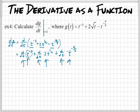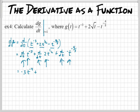Let's do t to the negative 3 first. That's going to be negative 3 — I took the negative 3 and dropped it — times t raised to negative 4, because negative 3 minus 1 is negative 4. Then we've got to take the derivative of the next term, 2t to the 1/2. What's 1/2 times 2? That's 1, so I'll put a 1 there. And then 1/2 minus 1 gives negative 1/2.